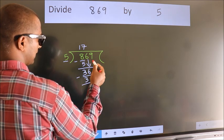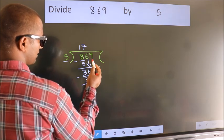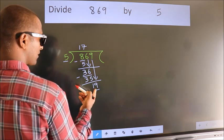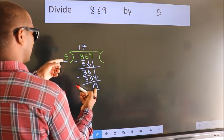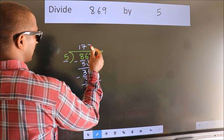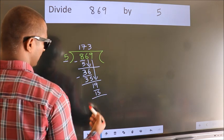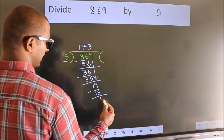After this, bring down the beside number. So 9 down, so 19. A number close to 19 in the 5 table is 5 times 3 is 15. Now we subtract. We get 4.